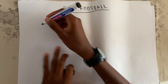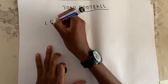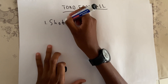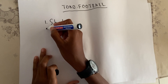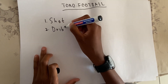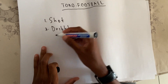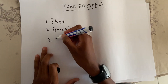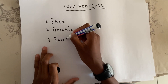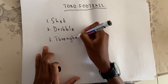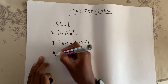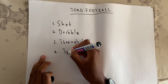At number one we are going to have a short, at number two it is going to be a drill, at number three we are going to have a triple, and at number four it is a triangle.